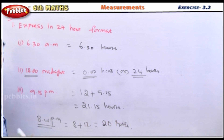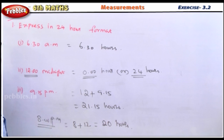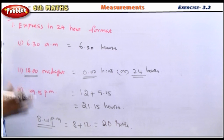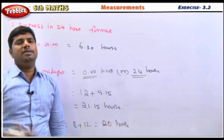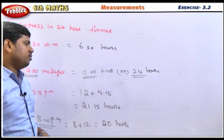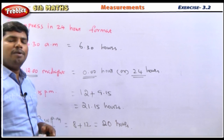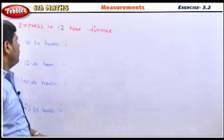22 hours is 10 PM at night. You can try these conversions from the examples given. Let's see how to express in 12-hour format.